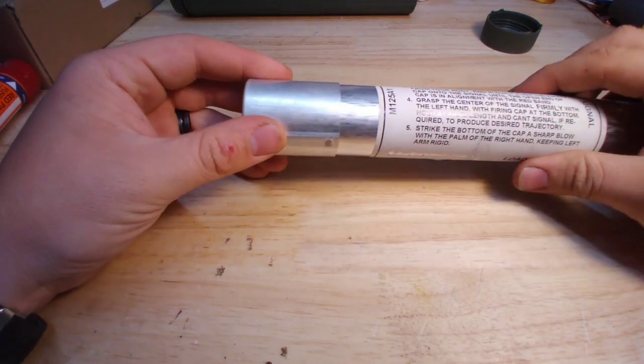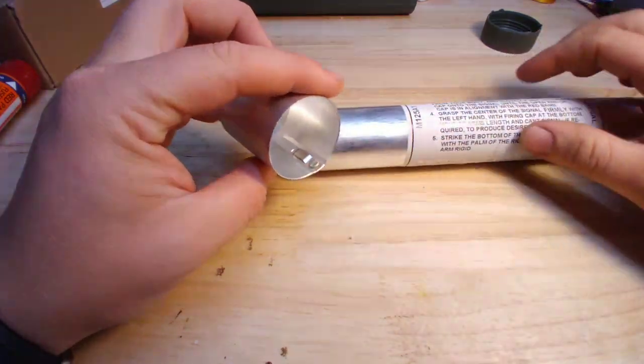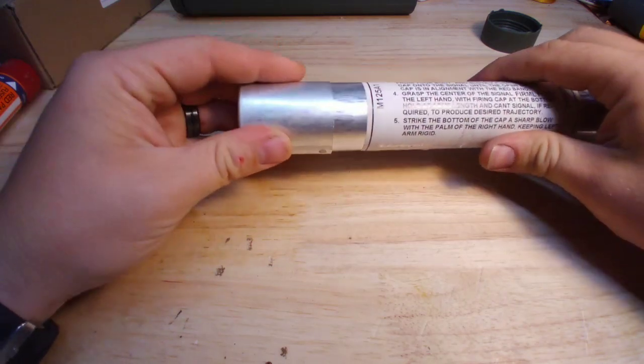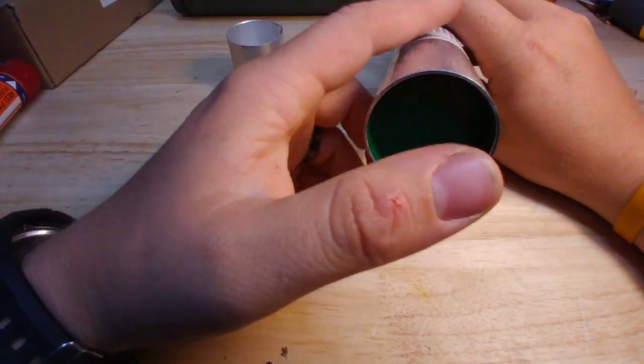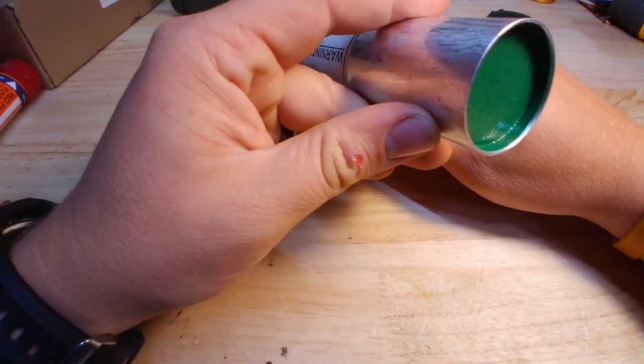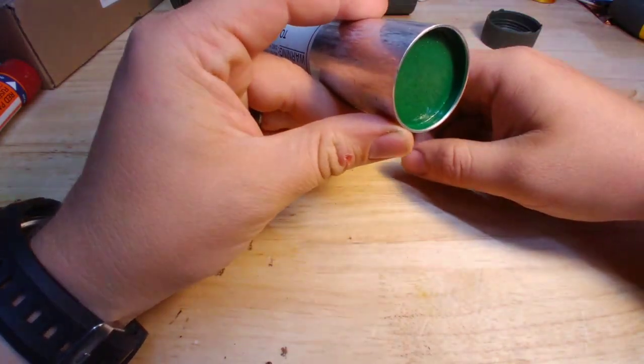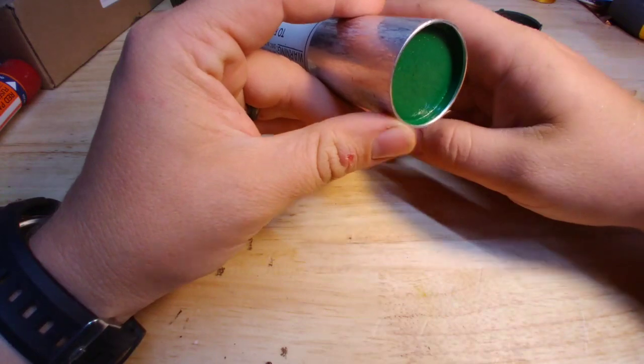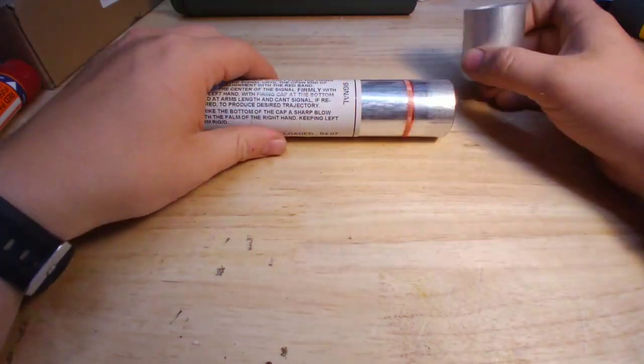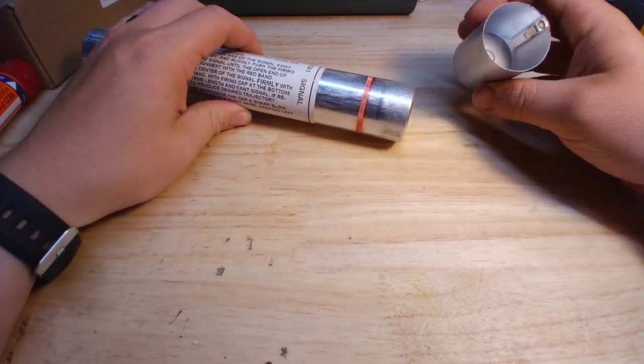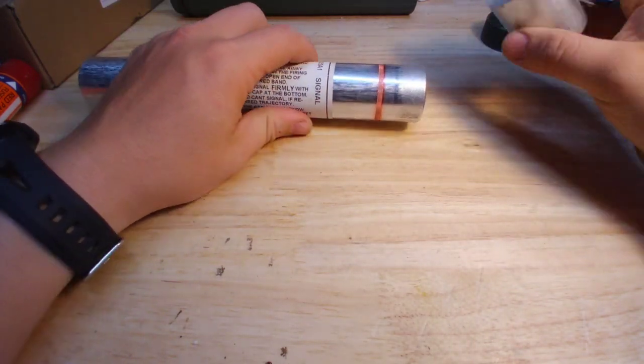And then at the other end you have this cap. Now this cap has a little piece of spring tab there to keep it from coming off. Then you'll have a cork sealant with latex paint sealant over it. It's a common way to seal up these signal rounds, even 37 and 40 millimeter rounds.